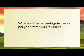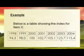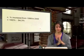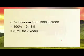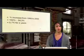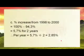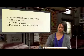Question C: what was the percentage increase per year from 1998 to 2000? In 1998 the index was 94.3, and in 2000 it was 100. The percentage increase is 100% minus 94.3%, giving us 5.7% for two years. Since they want the individual percentage increase per year, we divide 5.7 by 2, which gives us 2.85% per year.